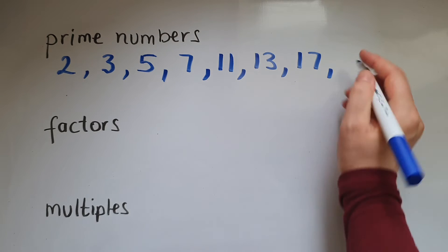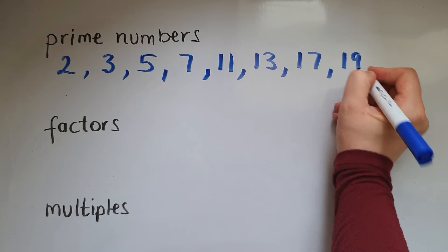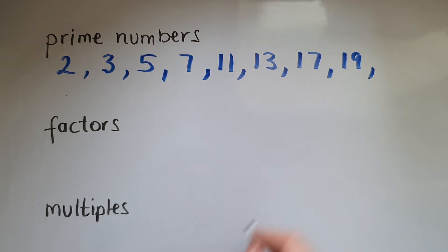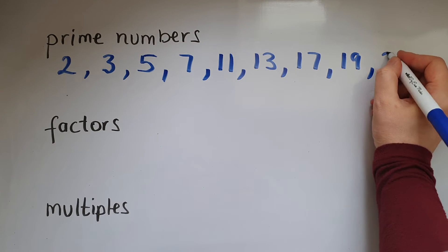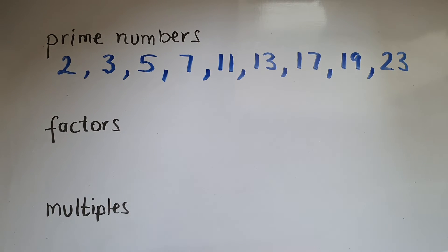Eighteen is not, nineteen is a prime number, twenty is not, twenty-one is not, twenty-two is not, twenty-three is a prime number, and so on.